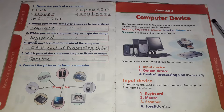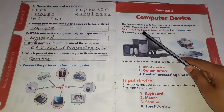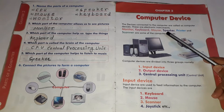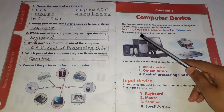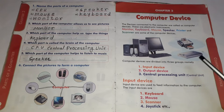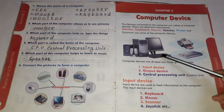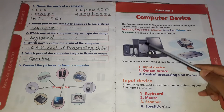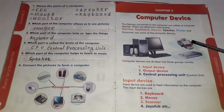और इन सभी चीज़ों को devices बोला जाता है. Monitor, keyboard, mouse, speaker, printer and scanner are some of the computer devices. So these are all the devices — monitor, keyboard, CPU, speaker, scanner, and printer.